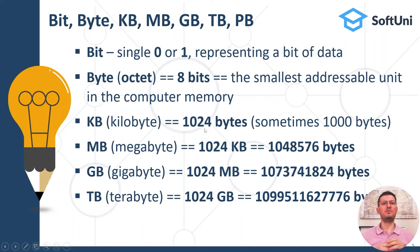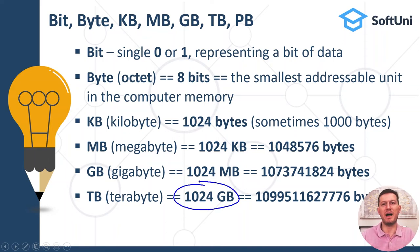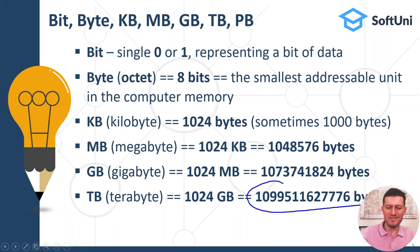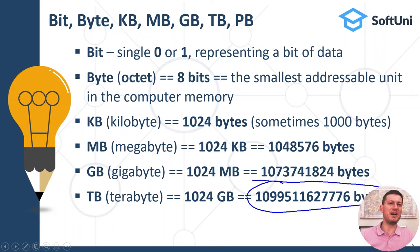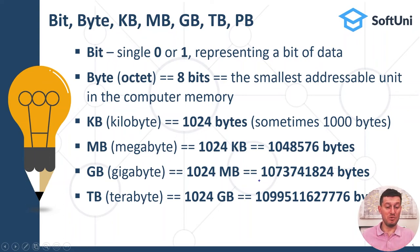The next unit is a terabyte, or TB. One terabyte consists of 1024 gigabytes, or approximately 1.1 trillion bytes. For example, one-terabyte hard drives typically store a few hundred full HD movies. Maybe you have experience with this.